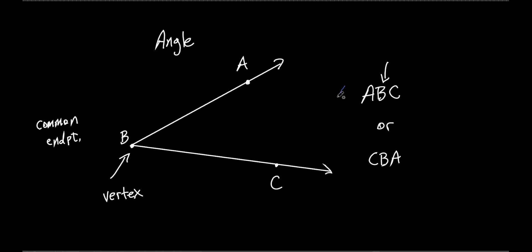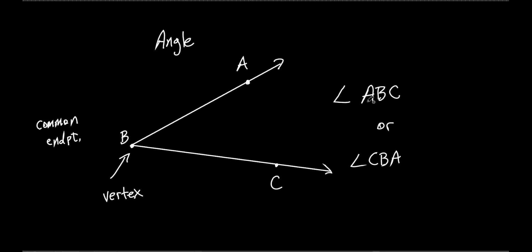Here's the symbol for an angle — it looks like a small angle shape, and you place it to the left of the letters. Don't put it above the letters. So this means angle ABC. Just by looking at the notation, I know the vertex is point B — it's always the middle letter. The two rays that make up the angle are called the sides of the angle.